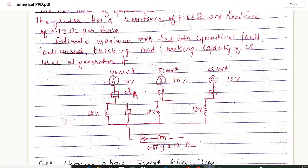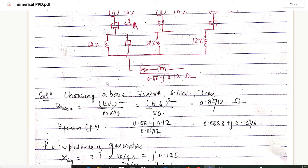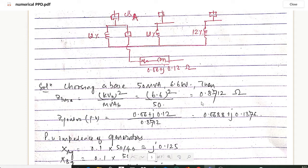Starting with the solution, we first choose the base MVA as 50 MVA and the base kilovolt as 6.6 kV. The base impedance is Z_base = kV² / MVA = (6.6)² / 50, which gives 0.8712 ohm.